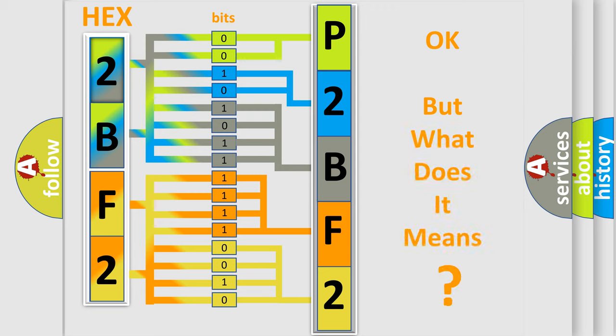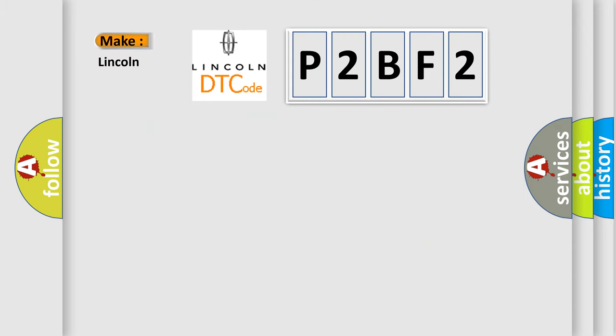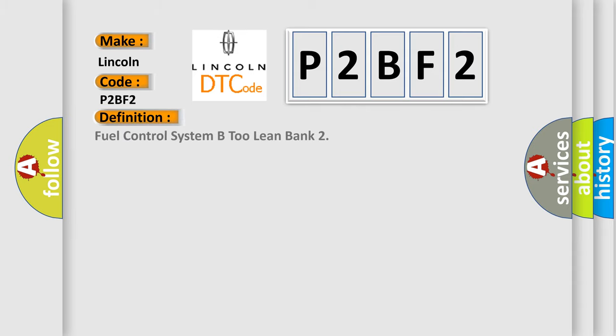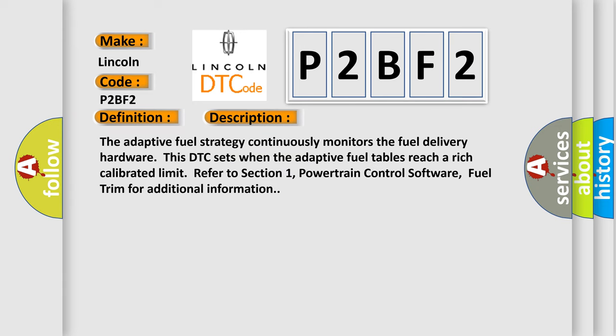The number itself does not make sense to us if we cannot assign information about what it actually expresses. So, what does the diagnostic trouble code P2BF2 interpret specifically for Lincoln car manufacturers? The basic definition is: Fuel Control System B2 Lean. The adaptive fuel strategy continuously monitors the fuel delivery hardware. This DTC sets when the adaptive fuel tables reach a rich calibrated limit. Refer to Section 1, Powertrain Control Software, Fuel Trim for additional information.